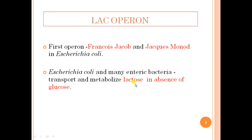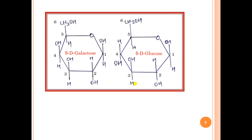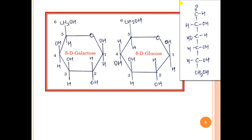Since the entire lac operon revolves around lactose, I will explain what lactose is made up of. Lactose is a disaccharide made up of two monosaccharides: beta-D galactose and beta-D glucose. Both galactose and glucose are aldoses — they have an aldehyde functional group in their molecule. In the linear structure of glucose, the first carbon atom has an aldehyde as the functional group, C double bond O, H. This carbonyl group is important for understanding the cyclic structure.